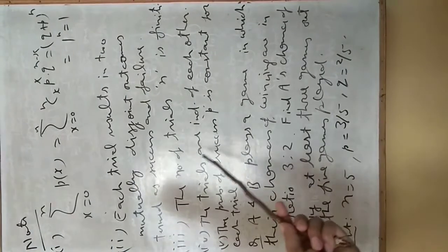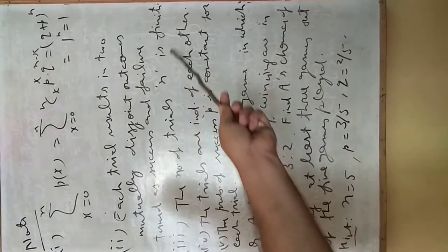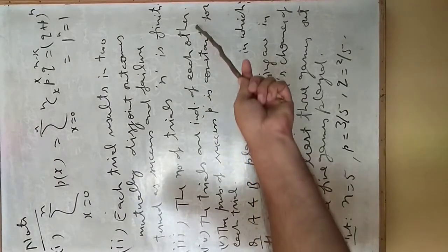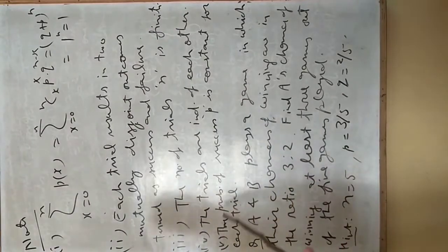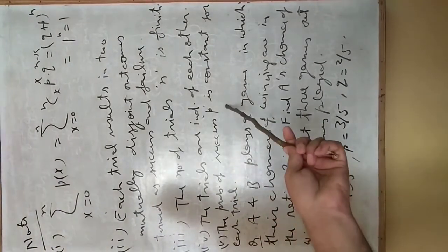Third, the number of trials n is finite. Total number of trials in an experiment will be finite. For a finite case, we are taking this binomial distribution. The trials are independent of each other.